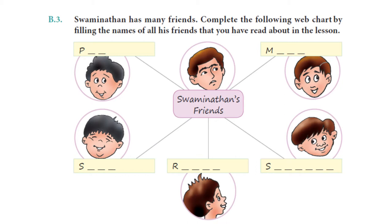Swaminathan has many friends. Complete the following web chart by filling the names of all his friends that you have read about in the lesson. So how to solve this? Because Soma starts in S and Shankapal starts in S and we don't know their faces also. No problem, it's easy because they have given the clues already.